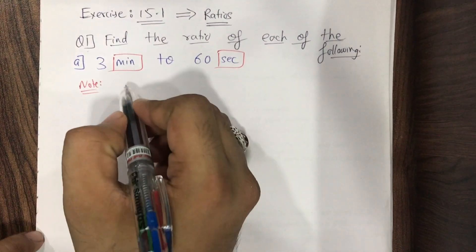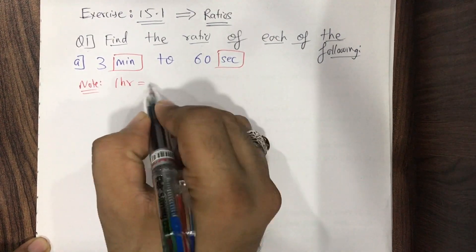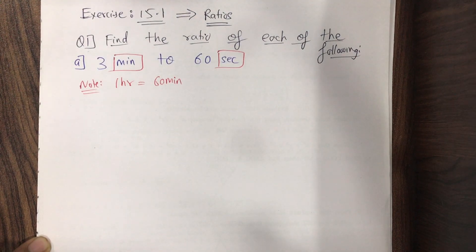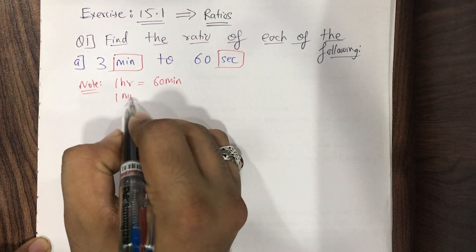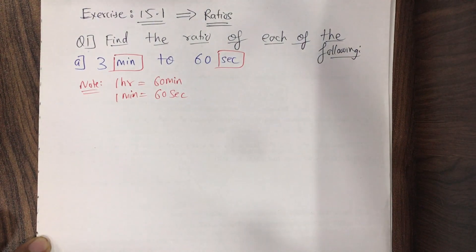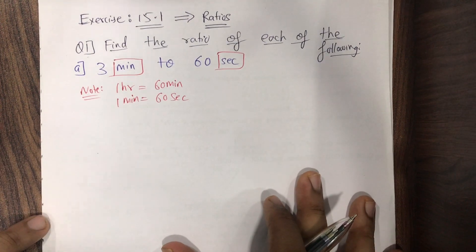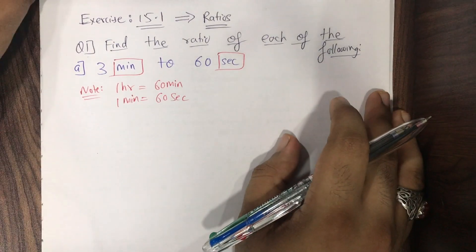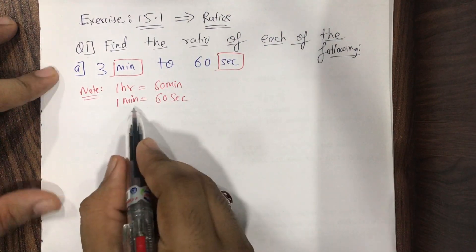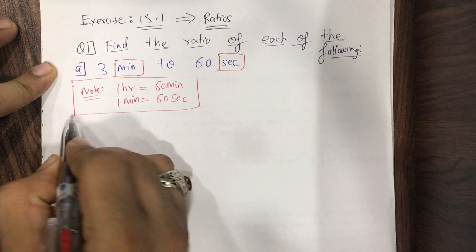Note: we know that 1 hour has 60 minutes, and 1 minute has 60 seconds. You should know this. So write it down: 1 hour is equivalent to 60 minutes, and 1 minute is equivalent to 60 seconds. Following this note, let's solve this question.